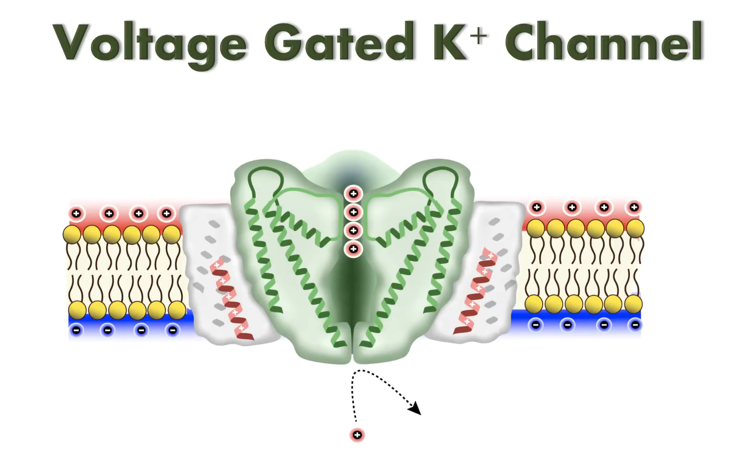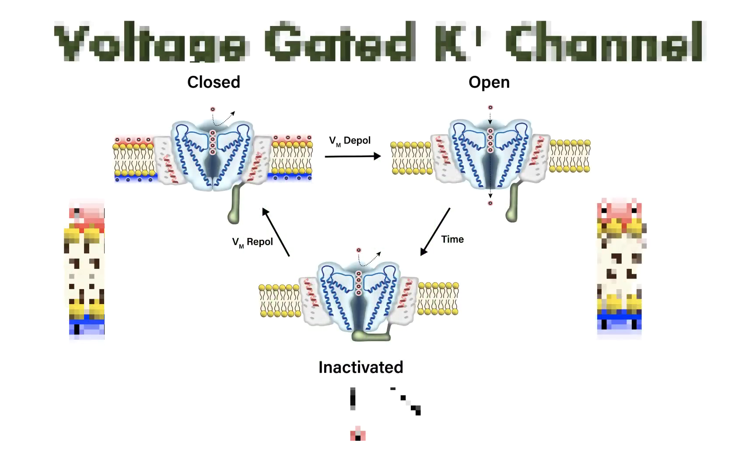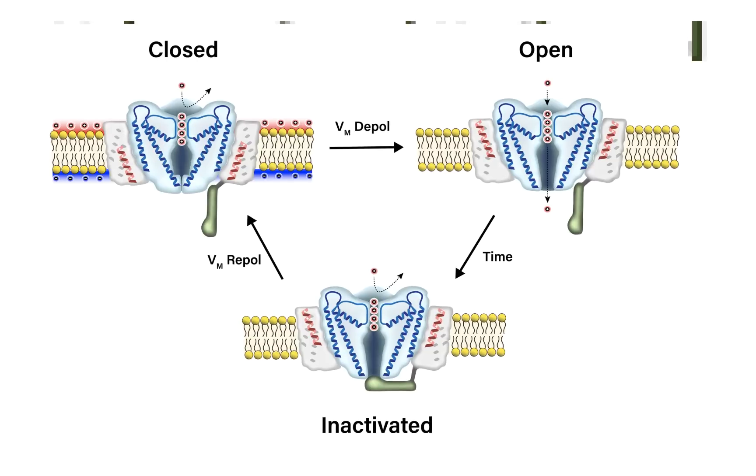Let's talk about voltage-gated potassium channels. In a previous video, I talked about the activation cycle of voltage-gated sodium channels, how they're able to proceed from the closed to open to the inactivated state back to the closed state, and talked about the various factors that are involved in those transitions.